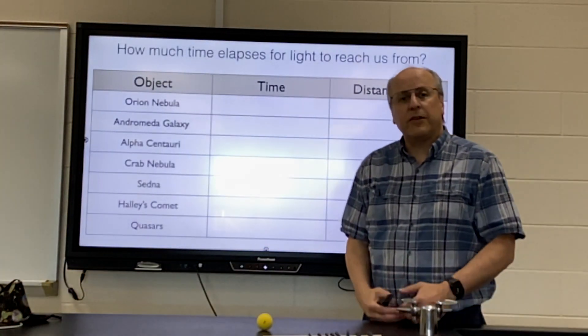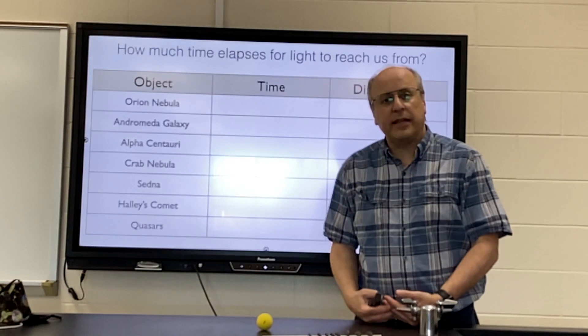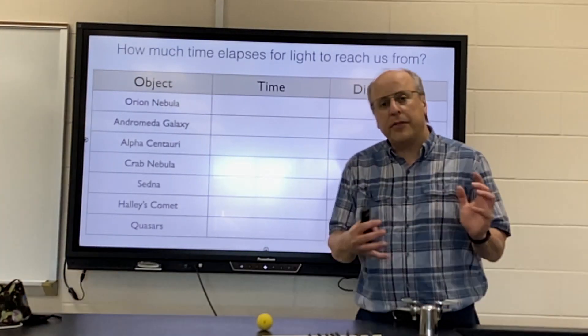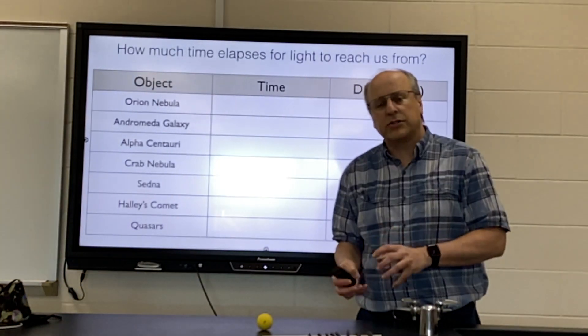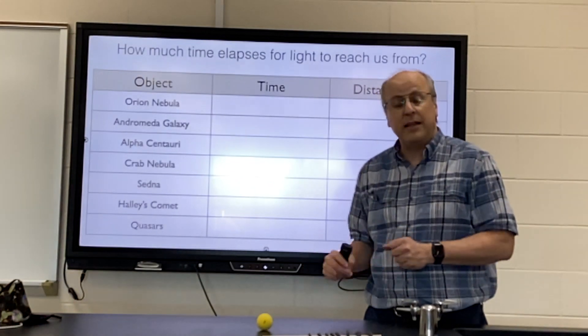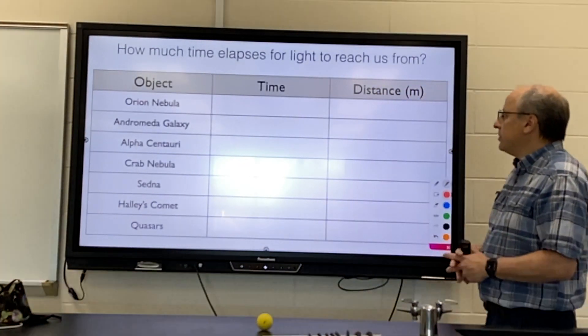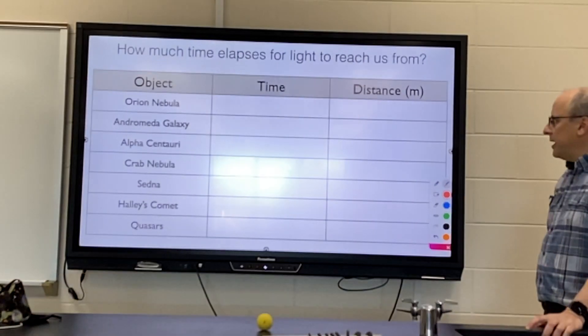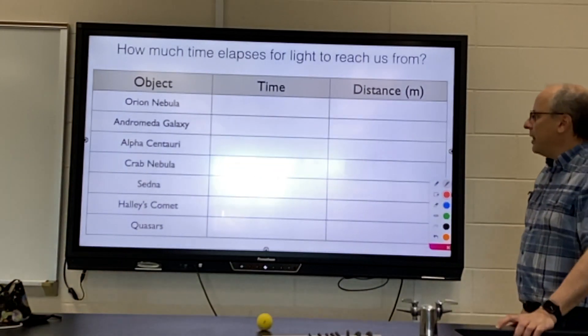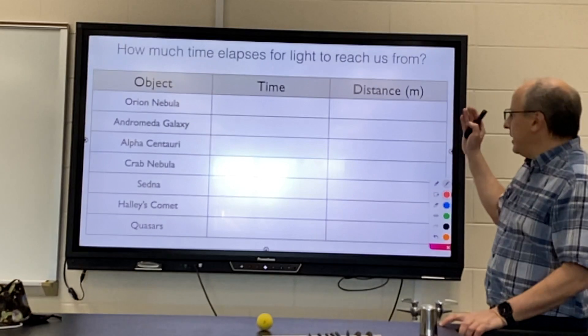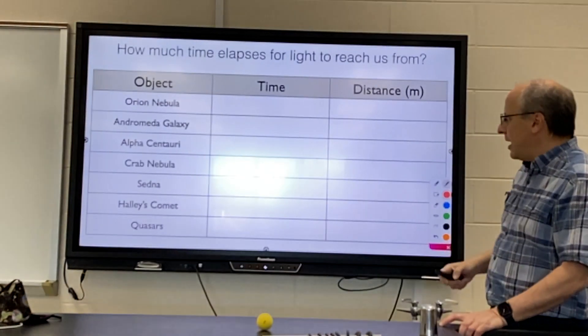Okay, I'd then like you to try figuring out how long it takes light to travel to the Earth from other objects not in our solar system per se, but anywhere in our universe. So if you make a chart that looks like this, I would like you to figure out how long it takes light to travel from these other objects.